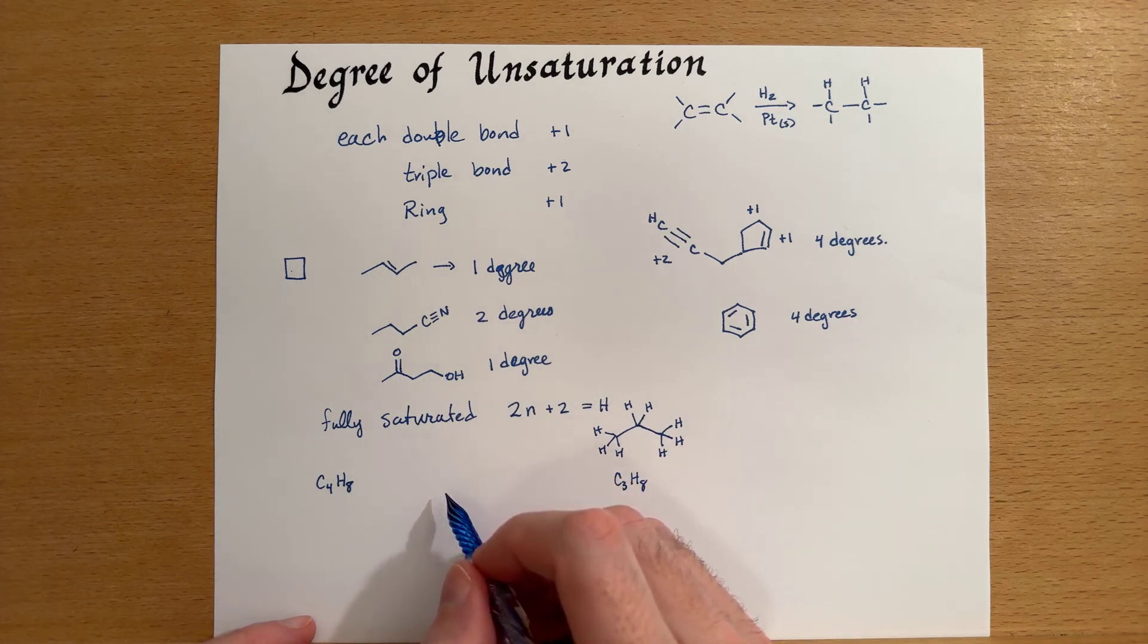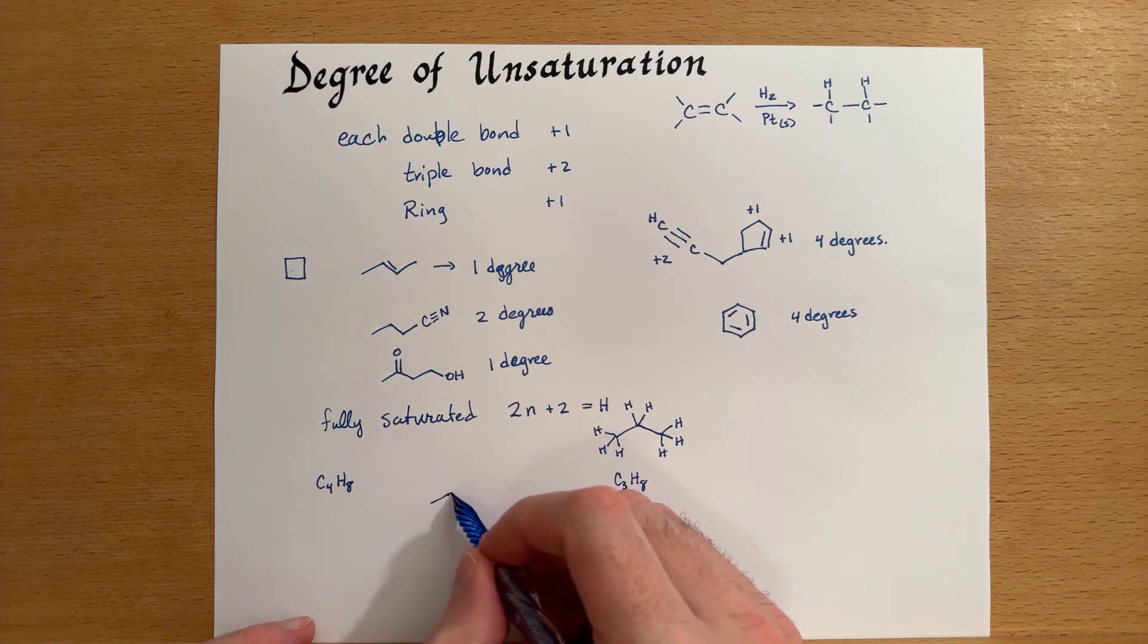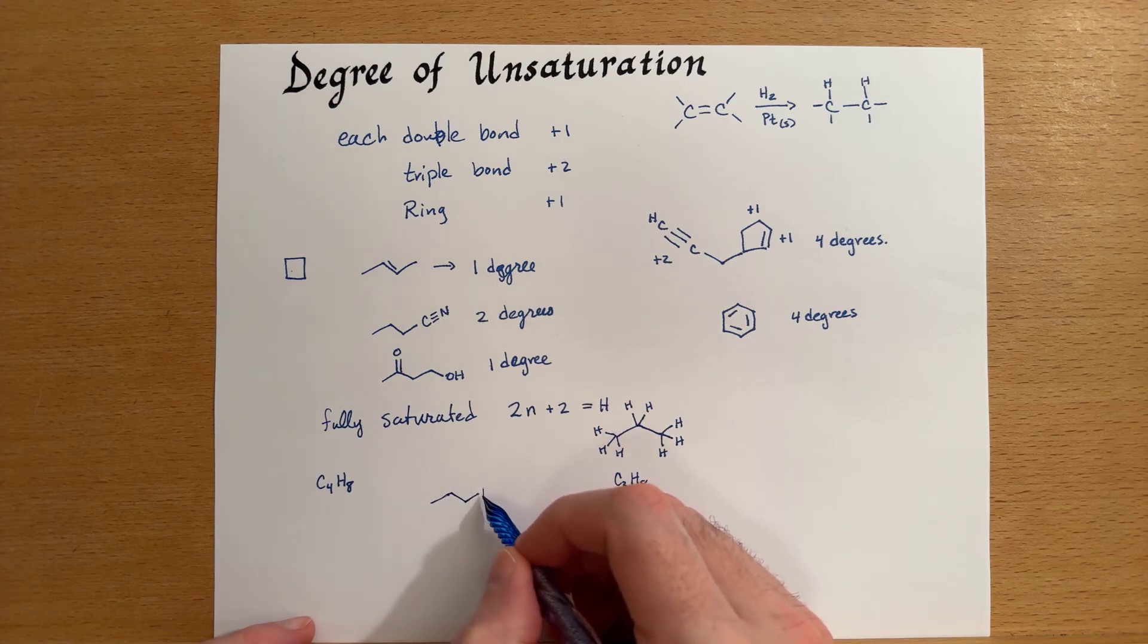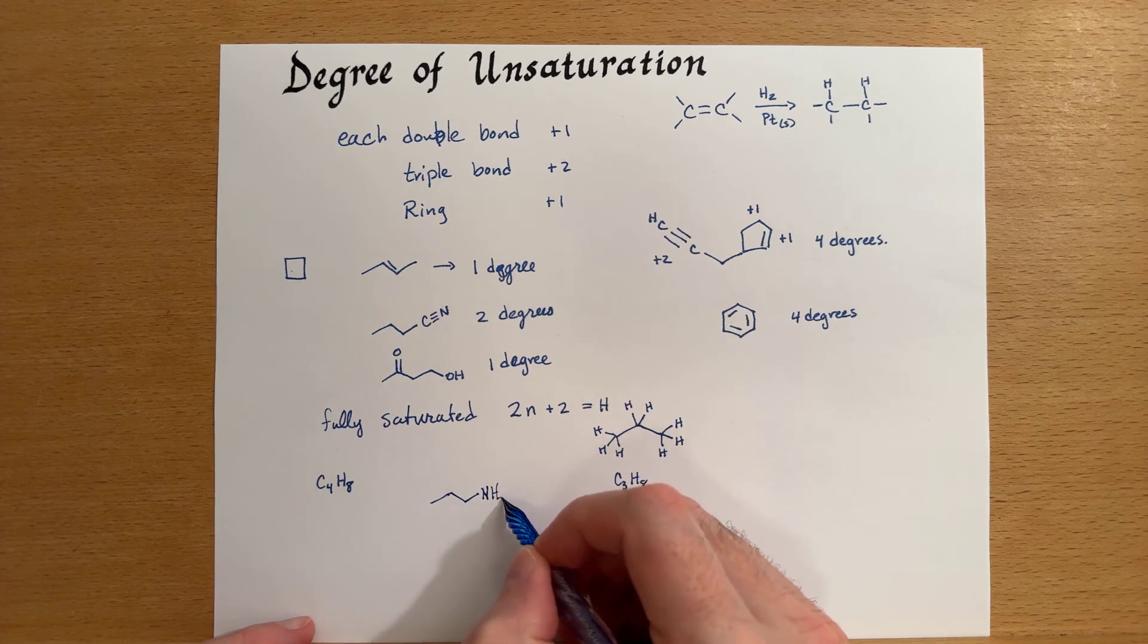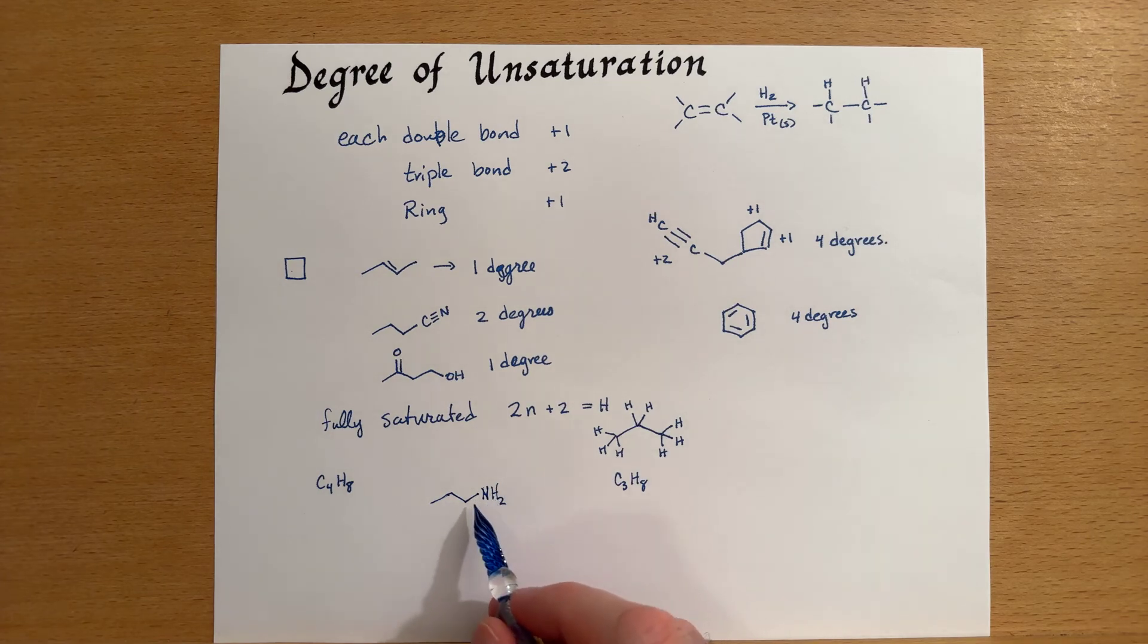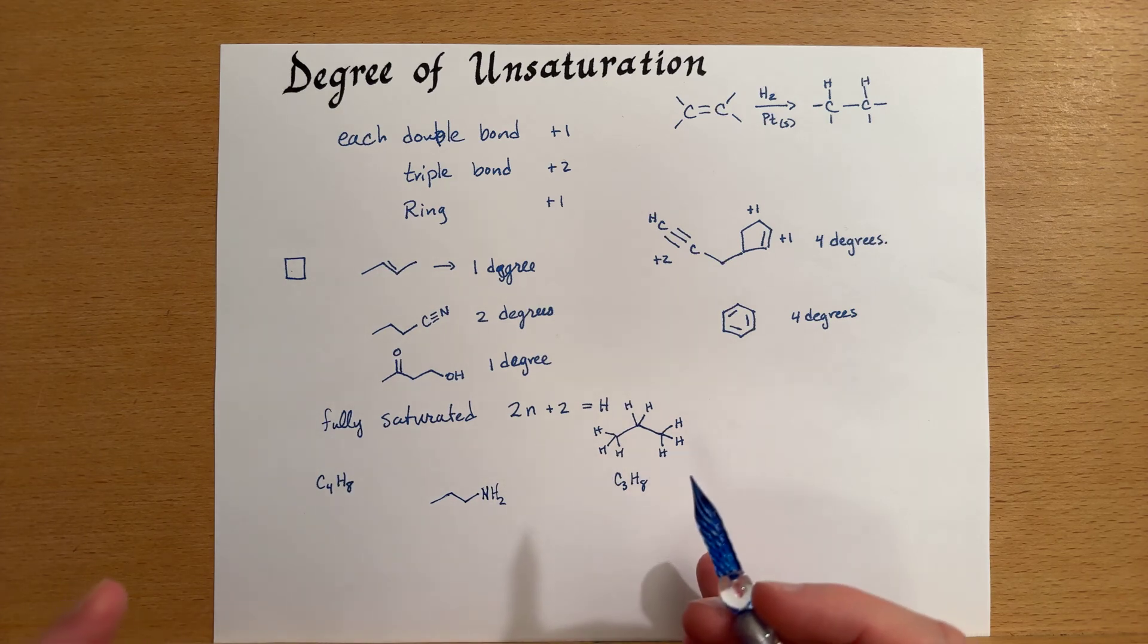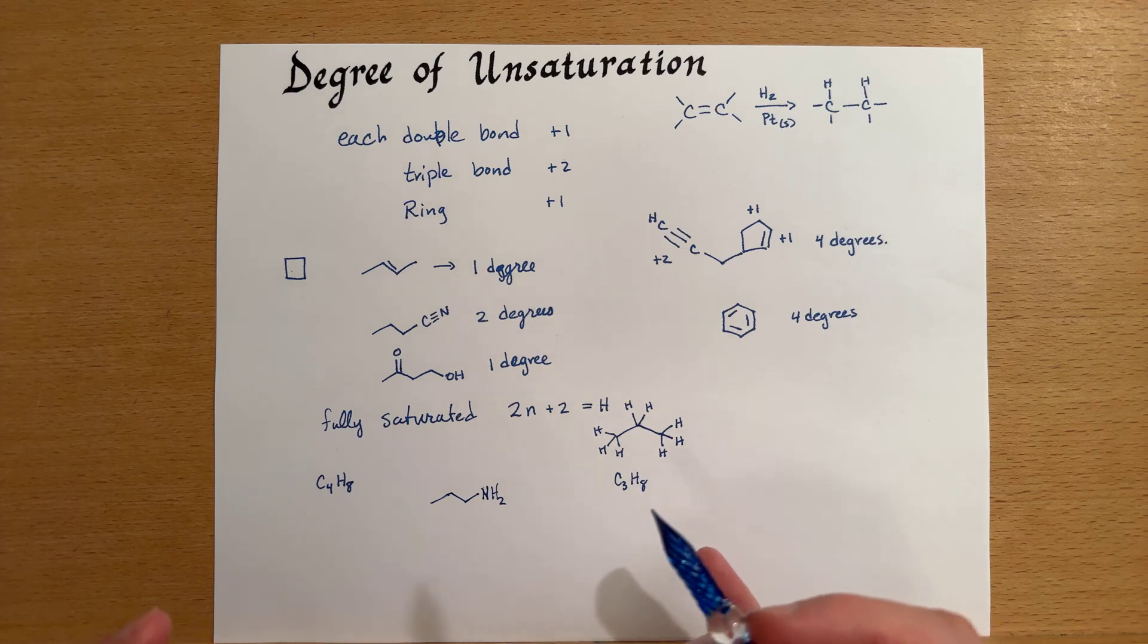Just remember that nitrogens will make three bonds. So, as an example, this would be a fully saturated version of this amine. And the nitrogen is completely saturated. It doesn't make any other bonds in the non-ionic form.